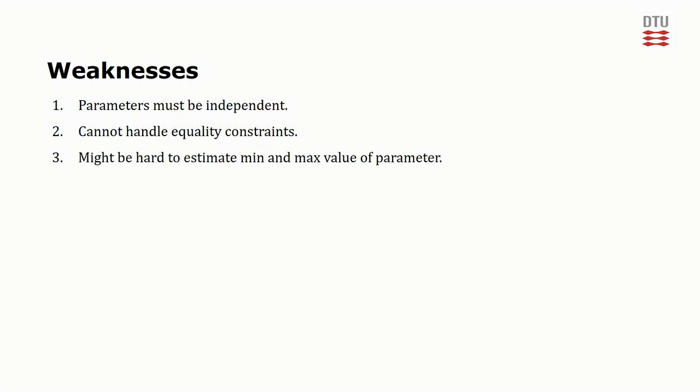Thirdly, it might be hard to estimate the minimum and maximum value of a parameter. For example, if the parameter follows a normal distribution as the one shown here. The normal distribution has no natural bounds, it just goes on forever in both directions. So you cannot say for certain what the minimum and maximum values should be.